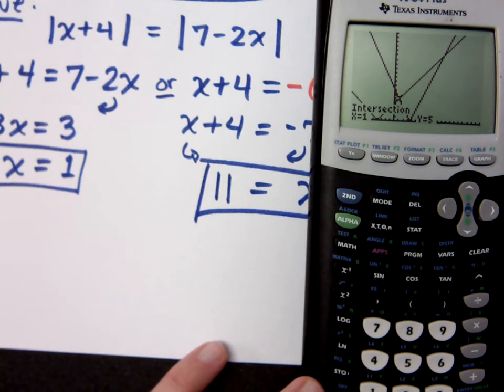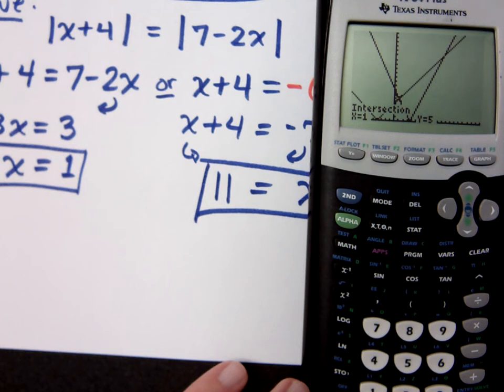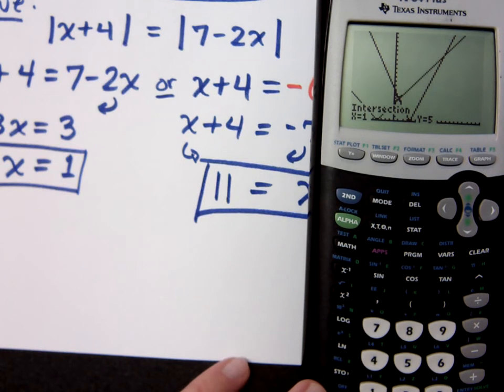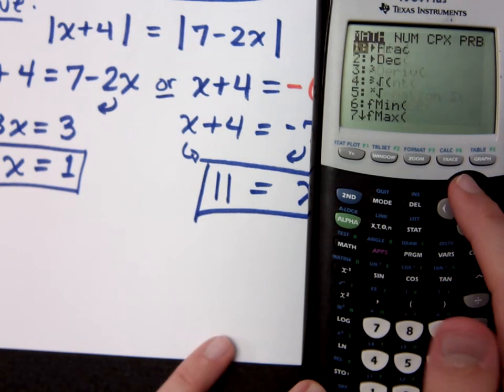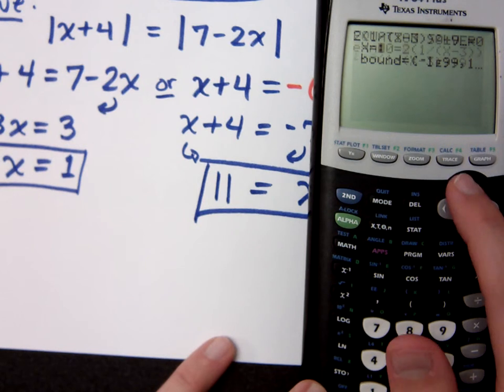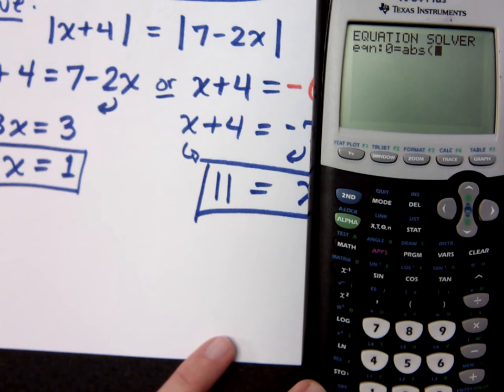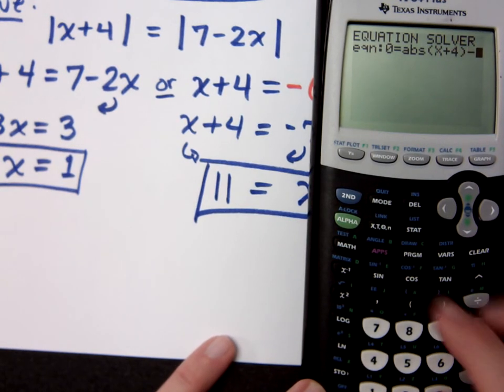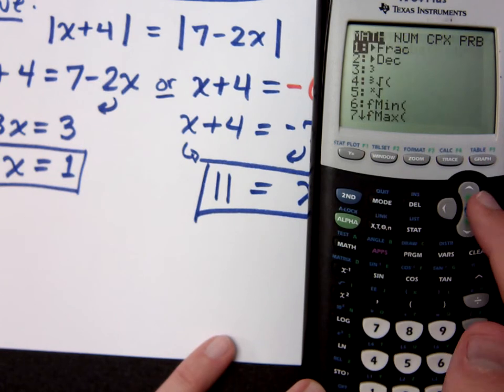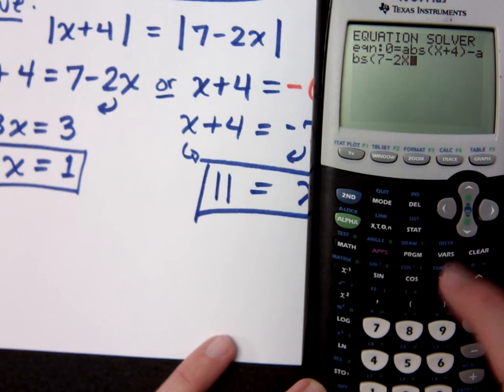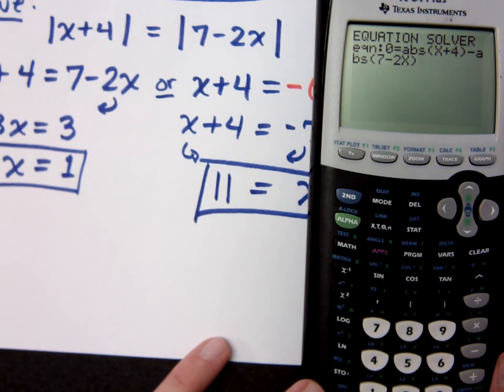Where else could you go to find the solutions to this equation? The solver? Go to the solver. So, if I go to math, solver, I have the absolute value of x plus 4. Then I have to subtract away from that the absolute value of 7 minus 2x. We bring that over to the other side.